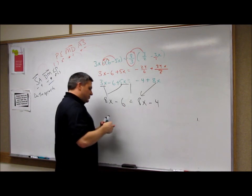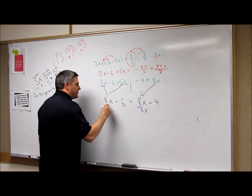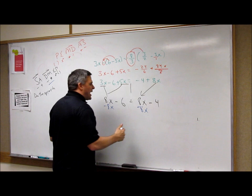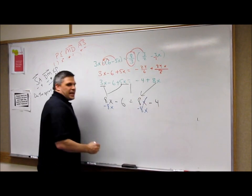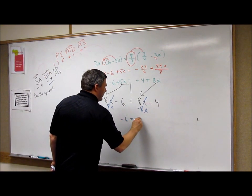So I move the 8 by adding the opposite, which is negative 8. But when I do that, remember, that's a minus, it's not divided. This cancels, this cancels. And I get negative 6 equals negative 4.